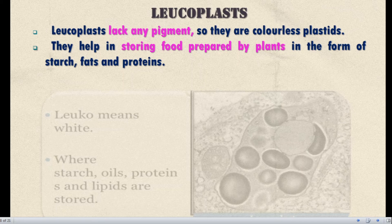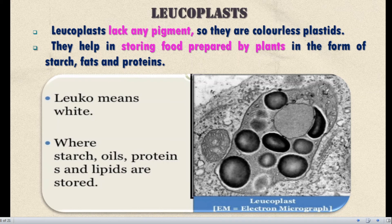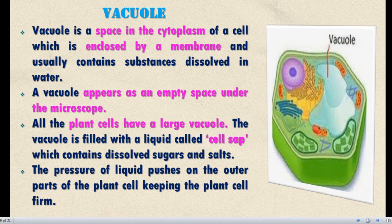Next, Leucoplast. Leucoplast is a colorless plastid. It helps in storing food prepared by the plants in the forms of starch, fats, and protein. Leuco means white. Starch, oil, proteins, and lipids are stored in leucoplasts.